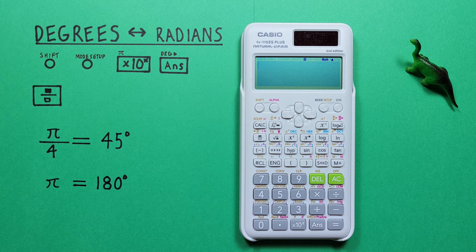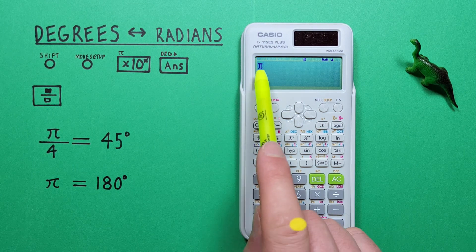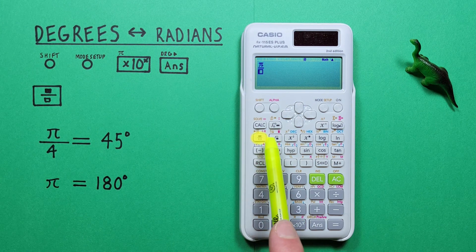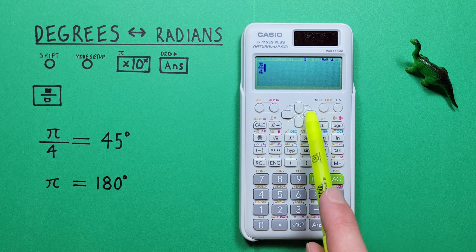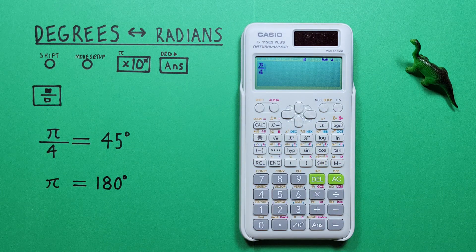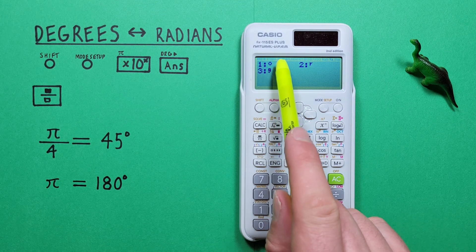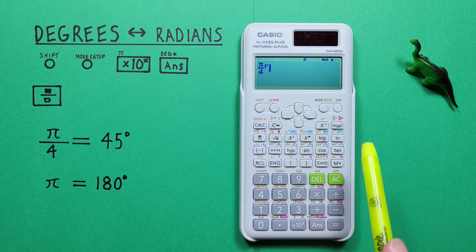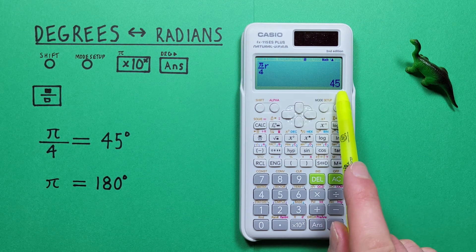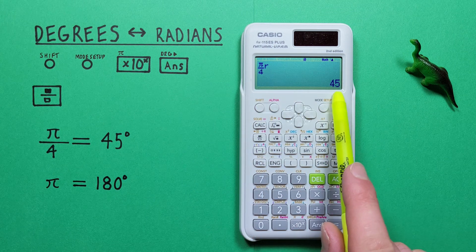Now we can enter pi over four on our calculator. We go shift then times 10 to the x to enter pi, then use the fraction key and four — there's our pi over four. We go one to the right so we're no longer beside the four, and then tell our calculator these are radians by pressing shift and then the answer key. We choose two for radians, the R appears, and now we have pi over four radians. Since we're in degrees mode, all we have to do is press equals, and we get the result of 45 degrees. So pi over four radians equals 45 degrees.